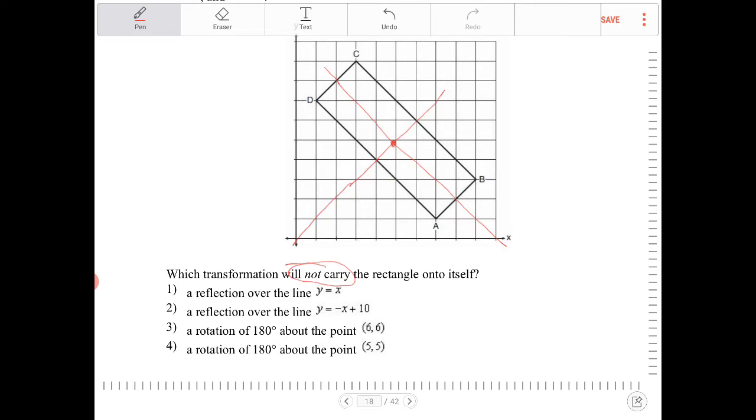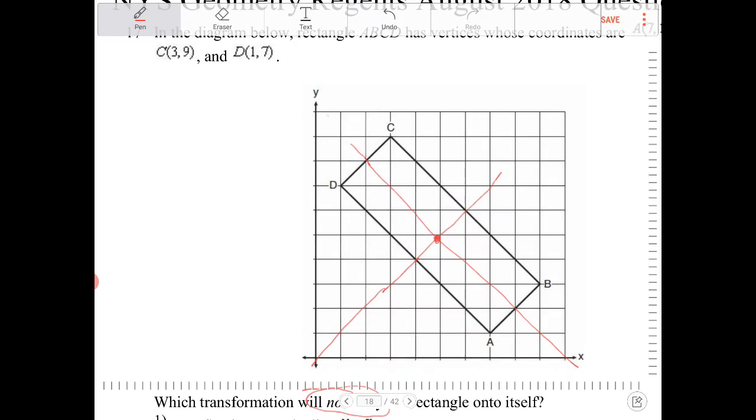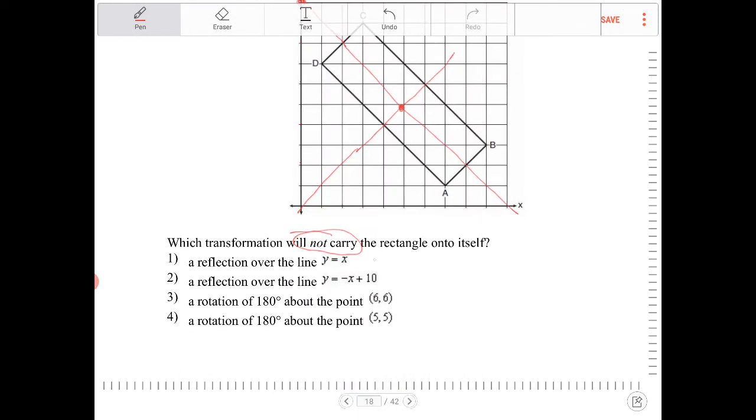So option one is not the answer for this problem. Number two, a reflection over the line y equals negative x plus 10. Negative x plus 10. So looking at this, two, four, six, eight, ten. So that is also correct. So these two are the two lines of reflection that I drew in the diagram there. So that doesn't work either.